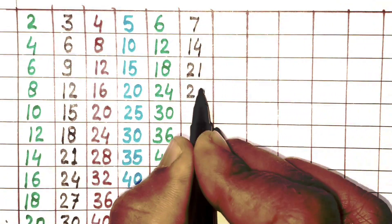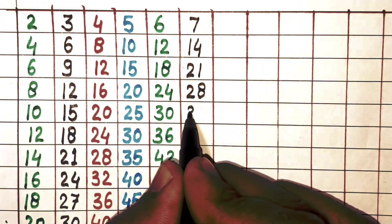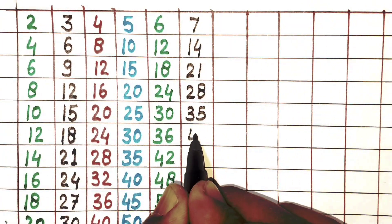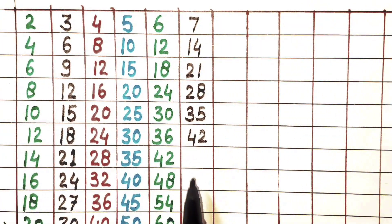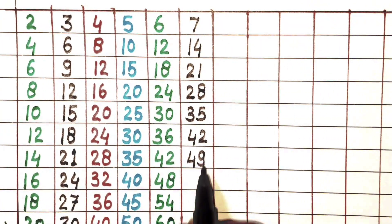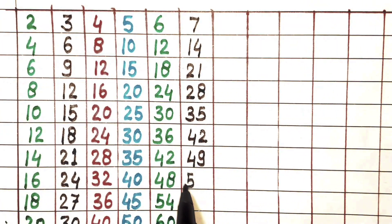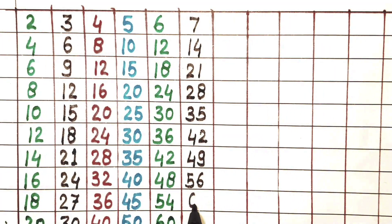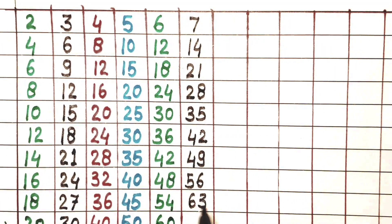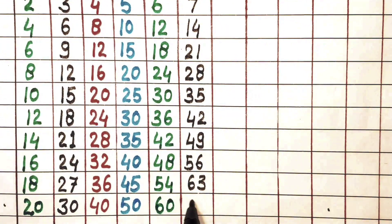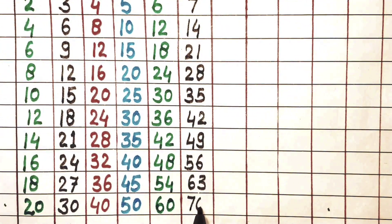Next 7. 7×3 is 21, 7×4 is 28, 7×5 is 35, 7×6 is 42, 7×7 is 49, 7×8 is 56, 7×9 is 63, 7×10 is 70.